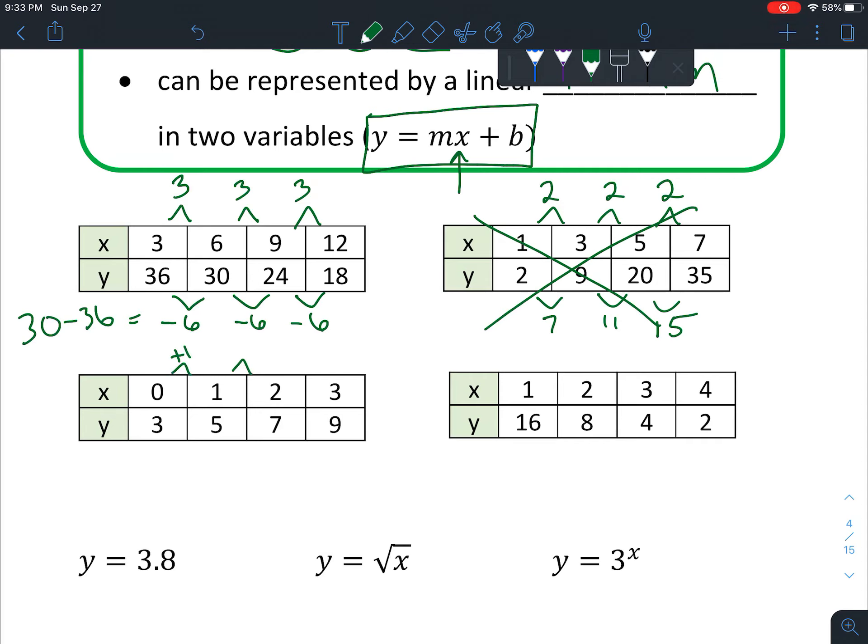Let's look at this one. Add 1, add 1, add 1, okay so that's constant on top. And then 5 minus 3 is 2, so we're adding 2. 7 minus 5 is 2, so we're adding 2. This one is a linear function.